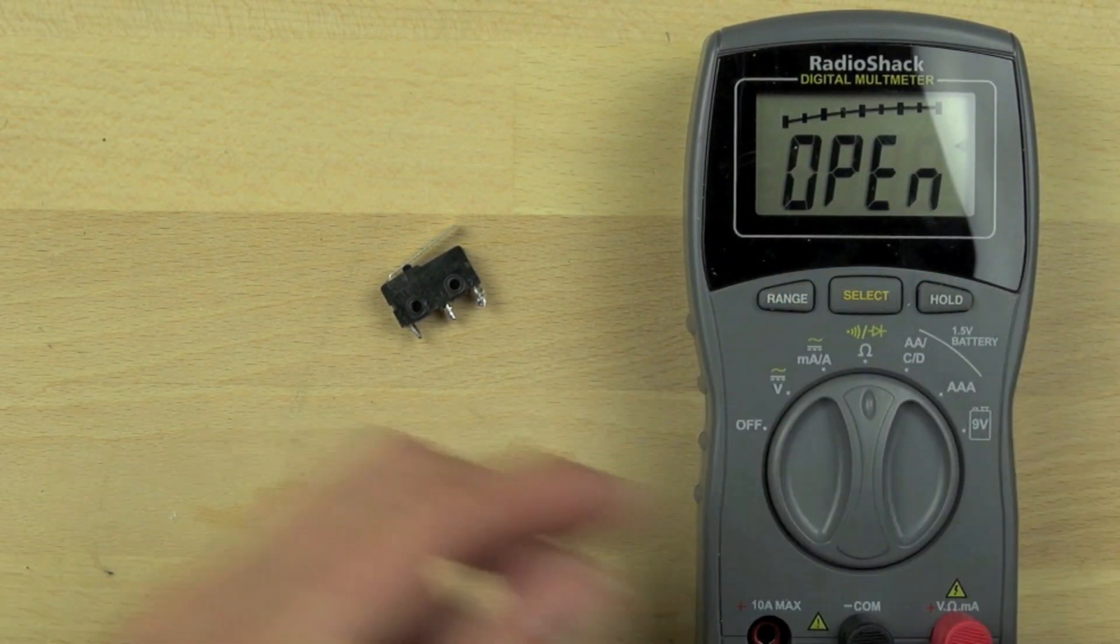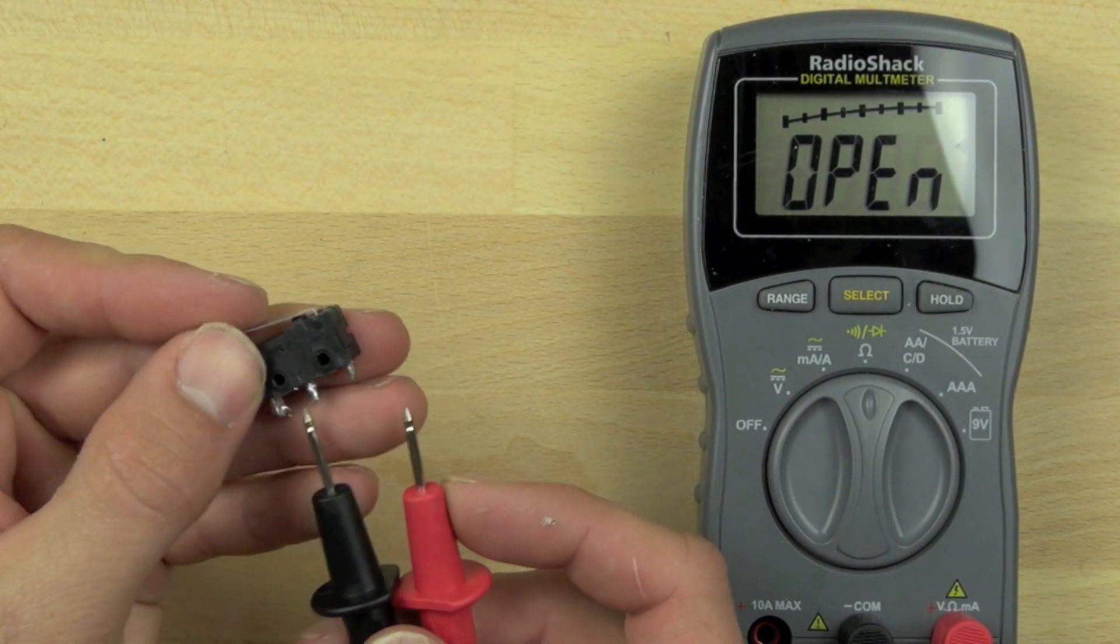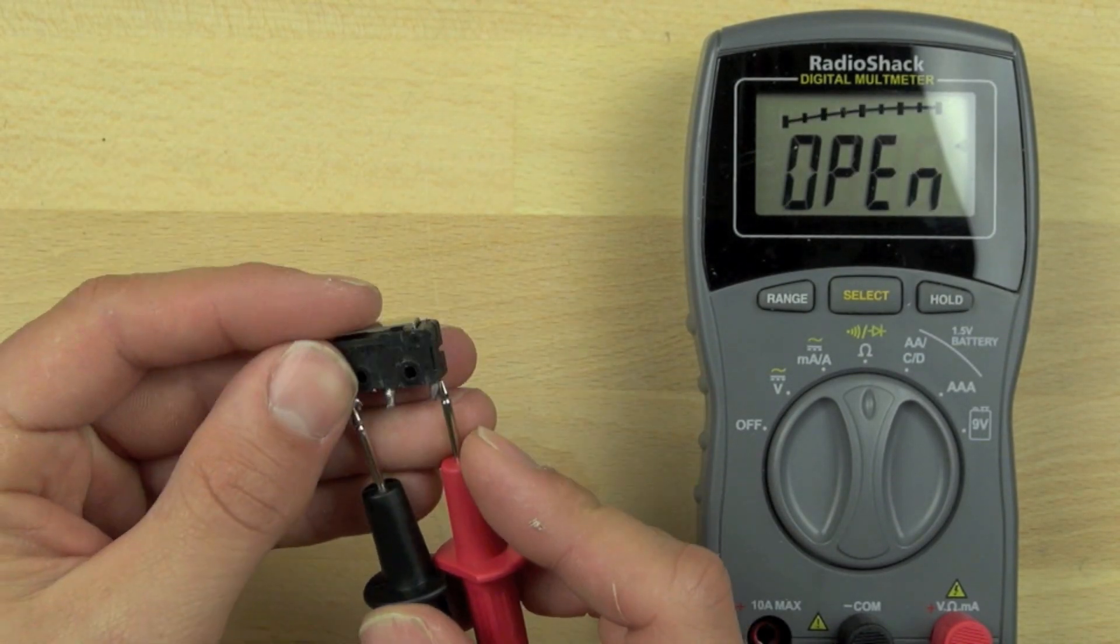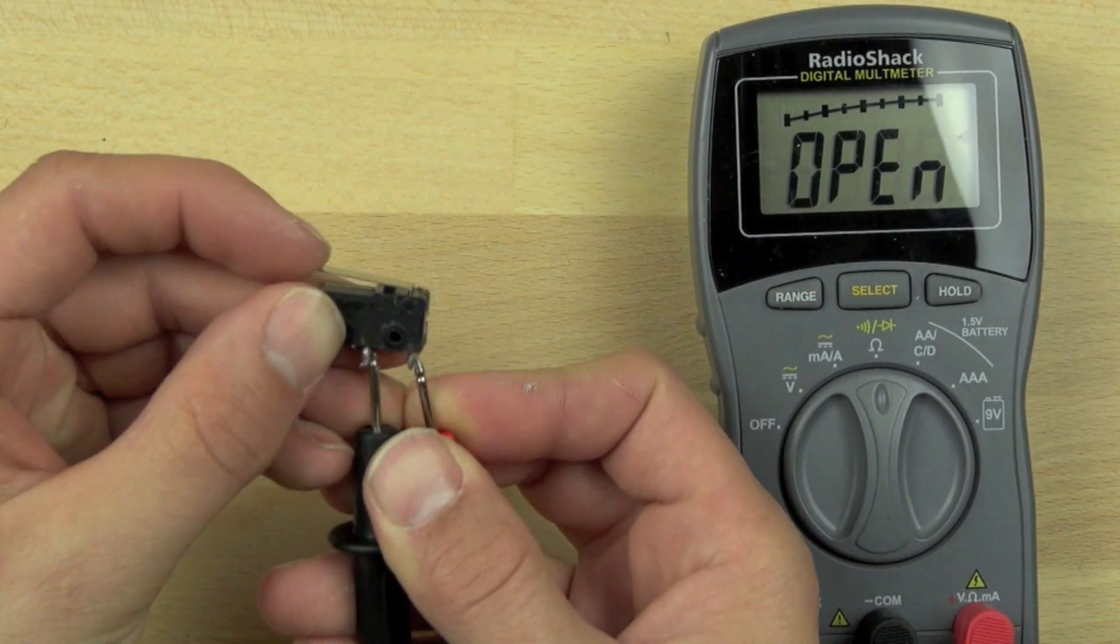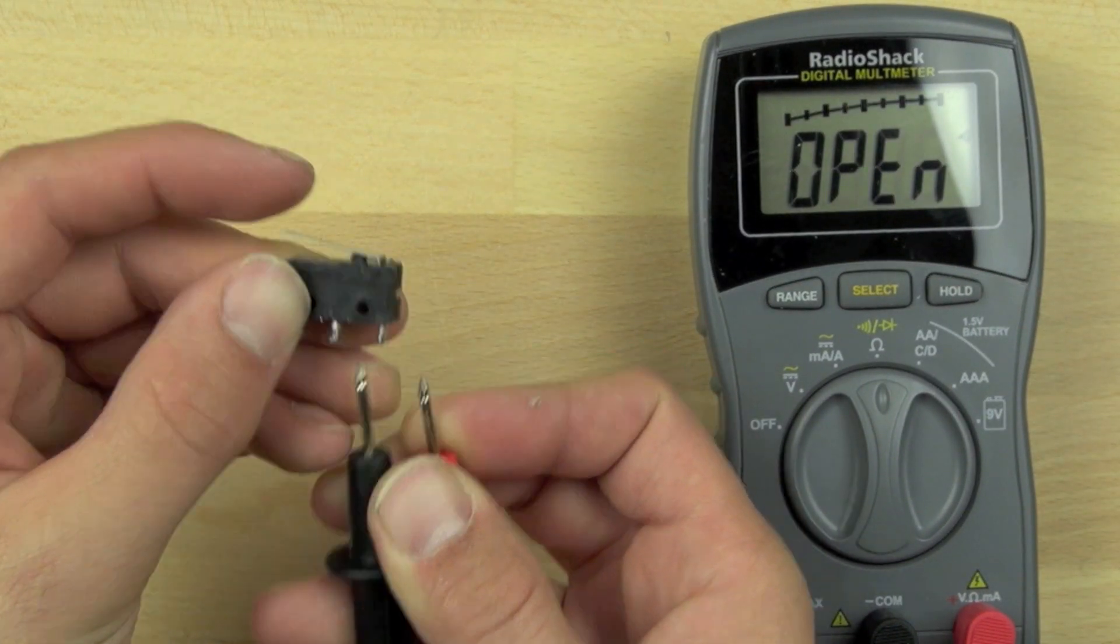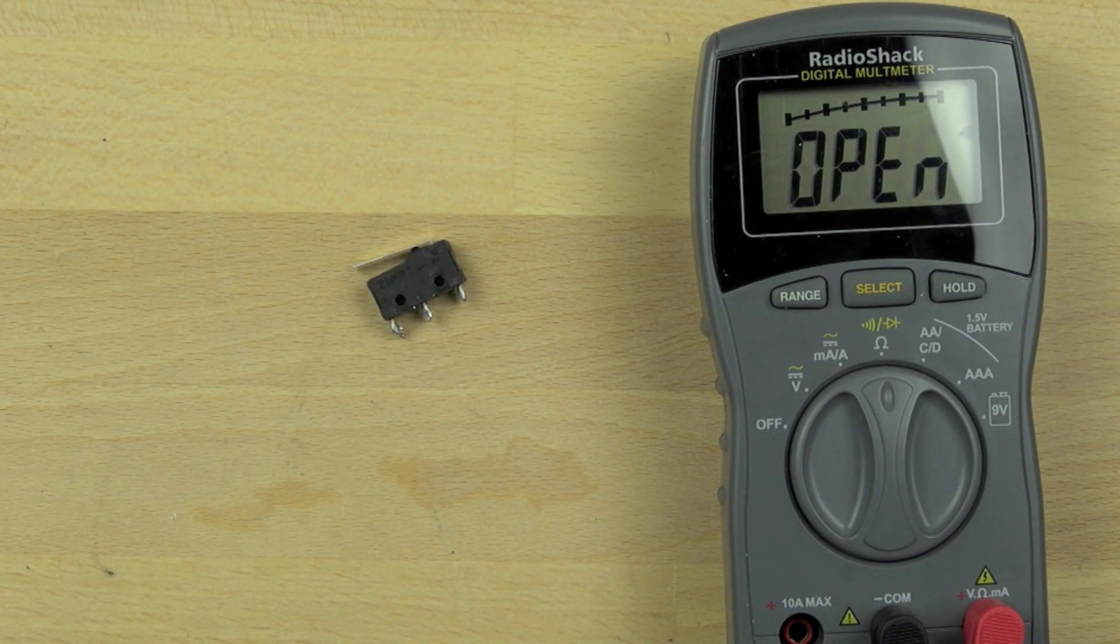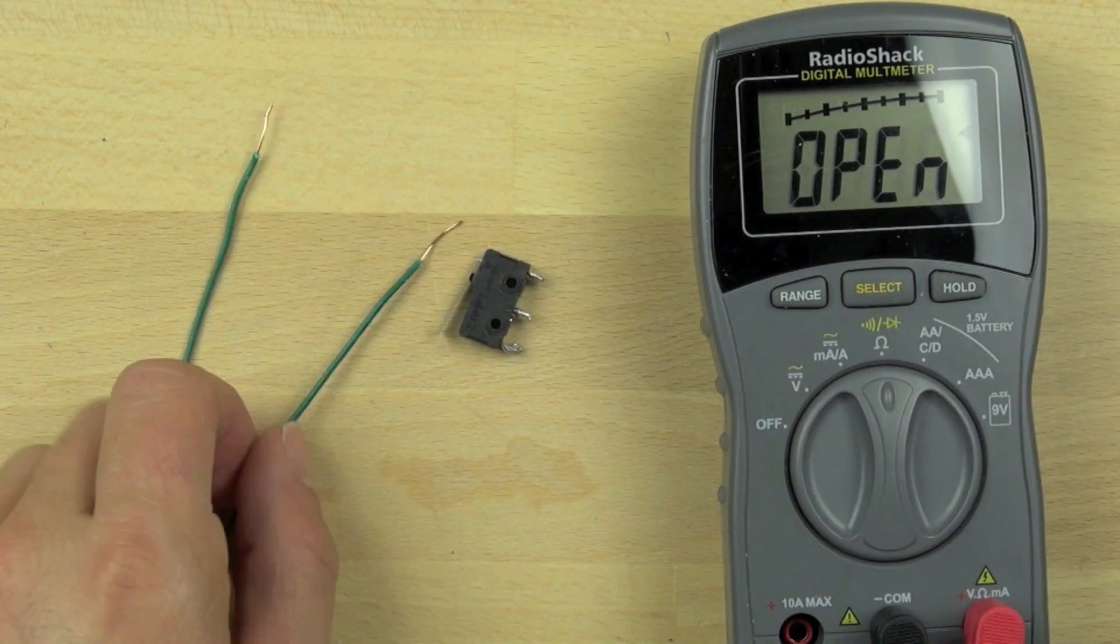We're just going to double check this with our multimeter. When we connect the contacts to 1 and 2, it turns off when the button is pressed. And then when we connect it to 1 and 3, it turns on when the button is pressed. So we want to connect to 1 and 3, and you can see there's a 1 and 3 really small on the lever switch there.